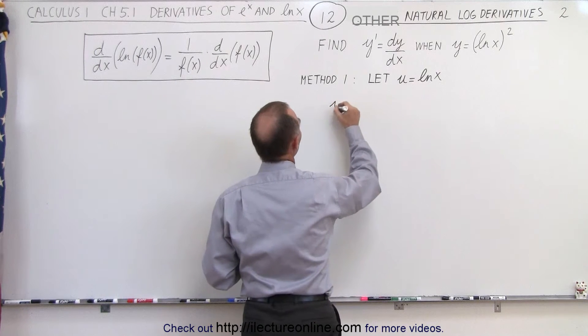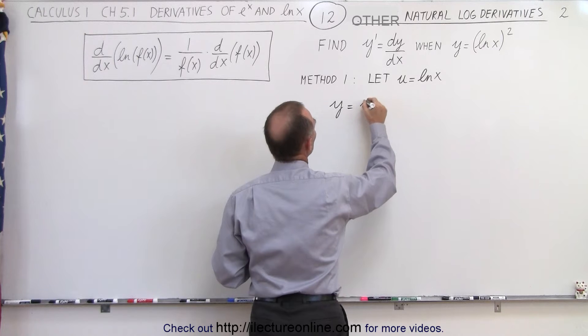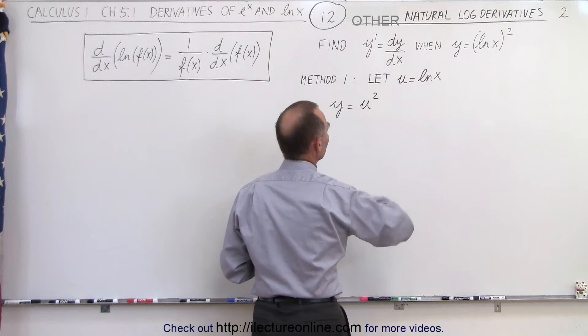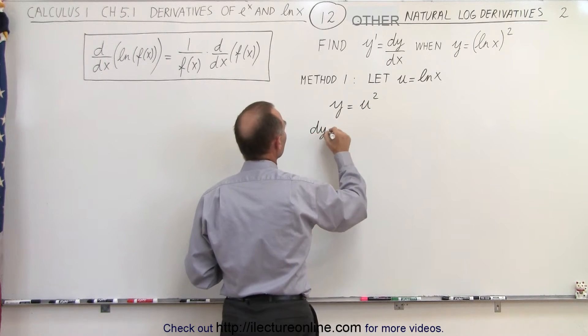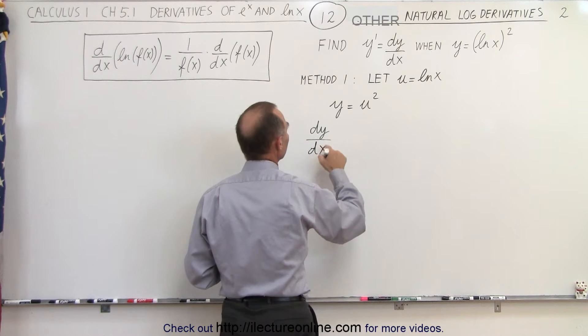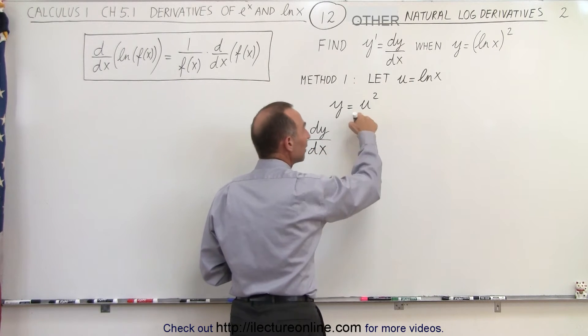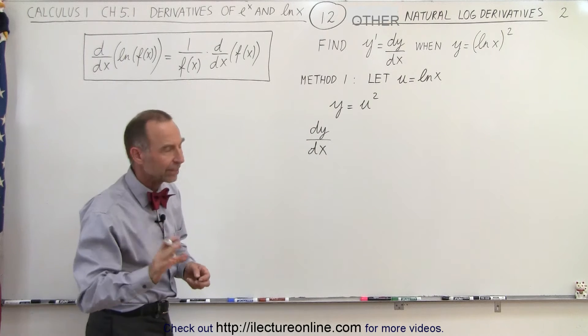So now we have y is equal to u squared. And so now when we take the derivative dy dx, notice that it's the derivative of y with respect to x, even though we have a u variable and we have to take that into account.